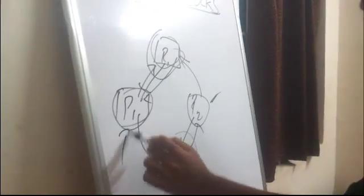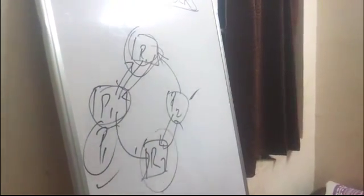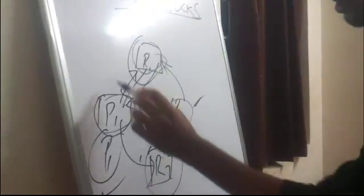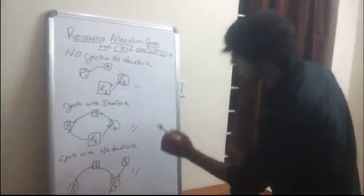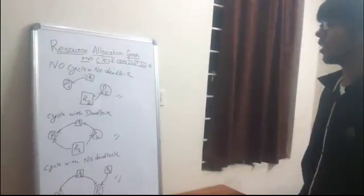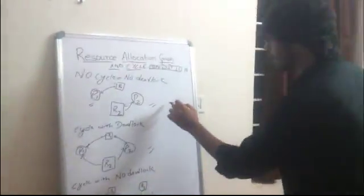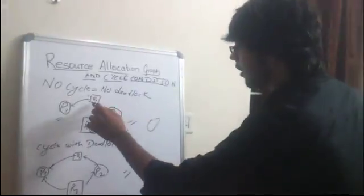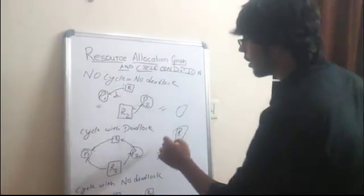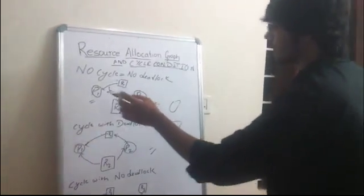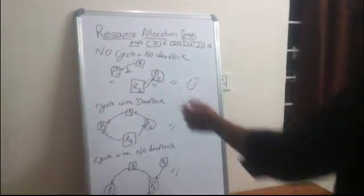Now I am going to explain resource allocation graph and cycle condition for deadlocks. The three graphs you can see here are resource allocation graphs. Processes are represented with a circle and resources with rectangles. These arrows show the request edge and allocation edge.